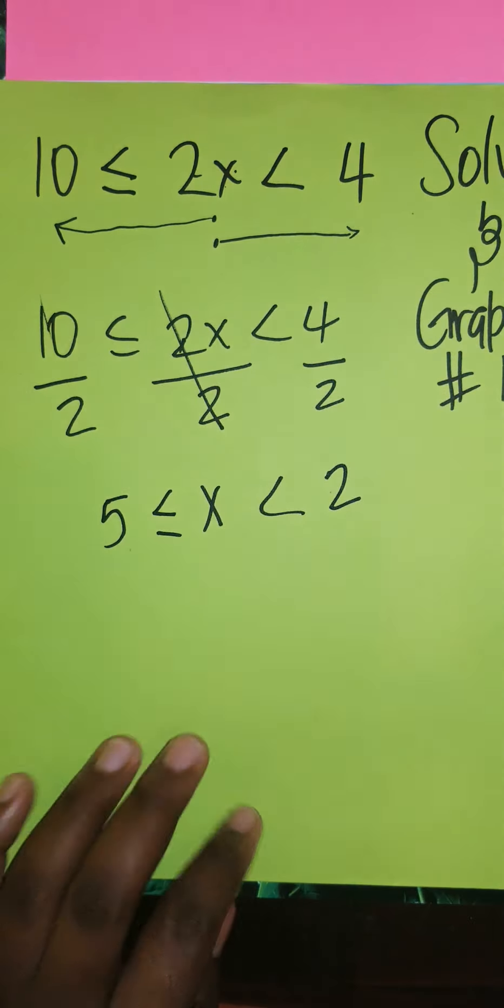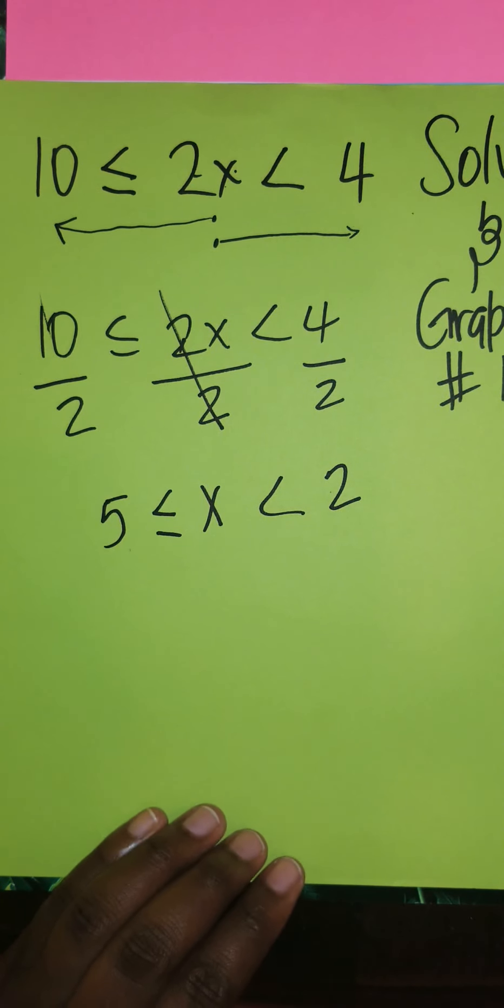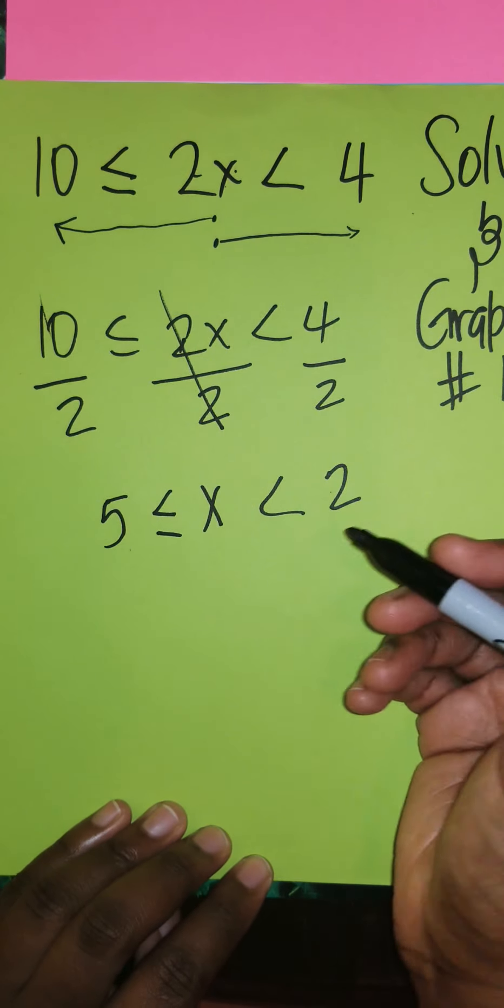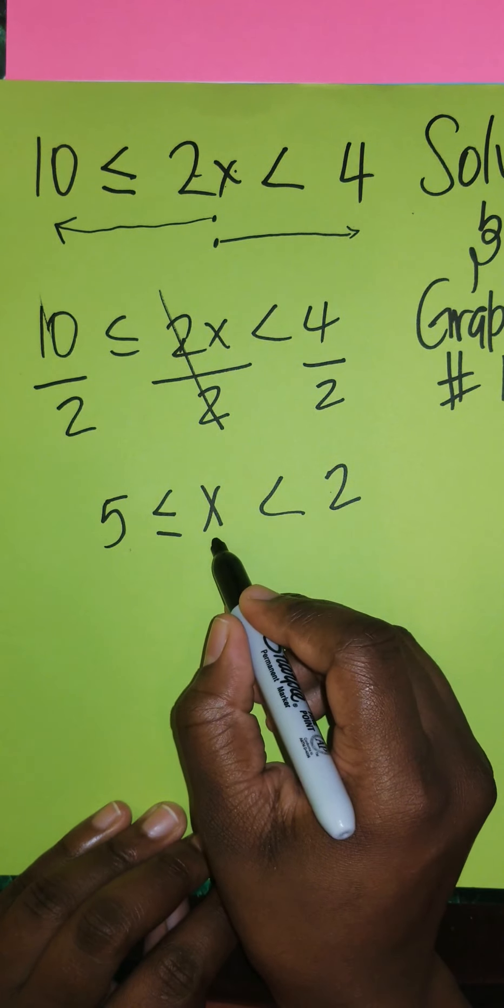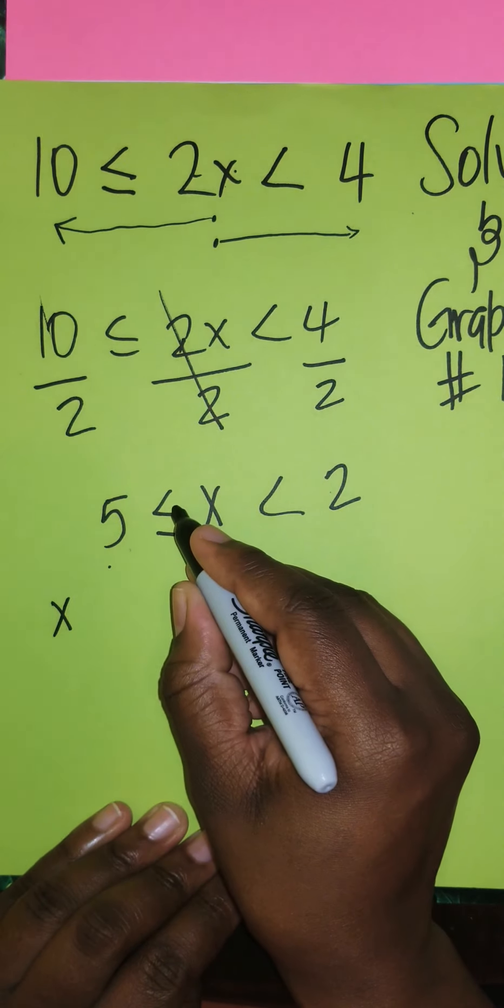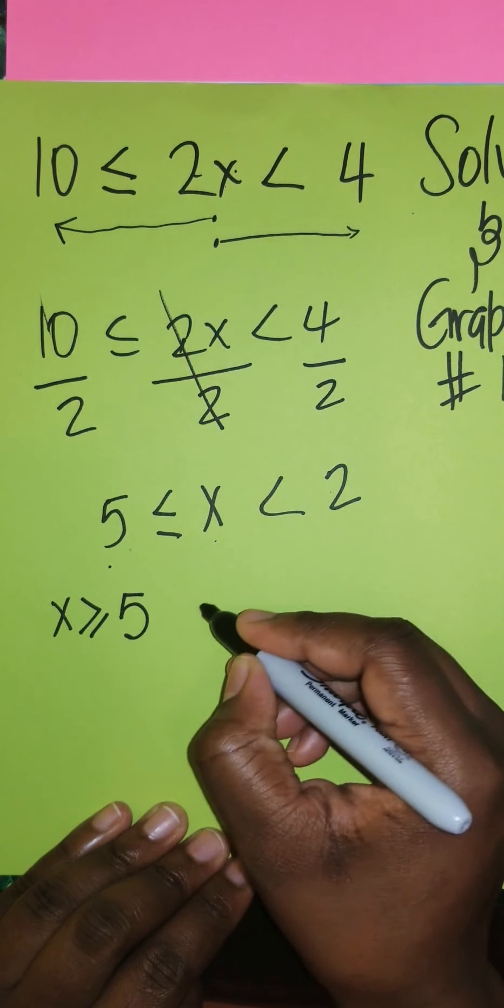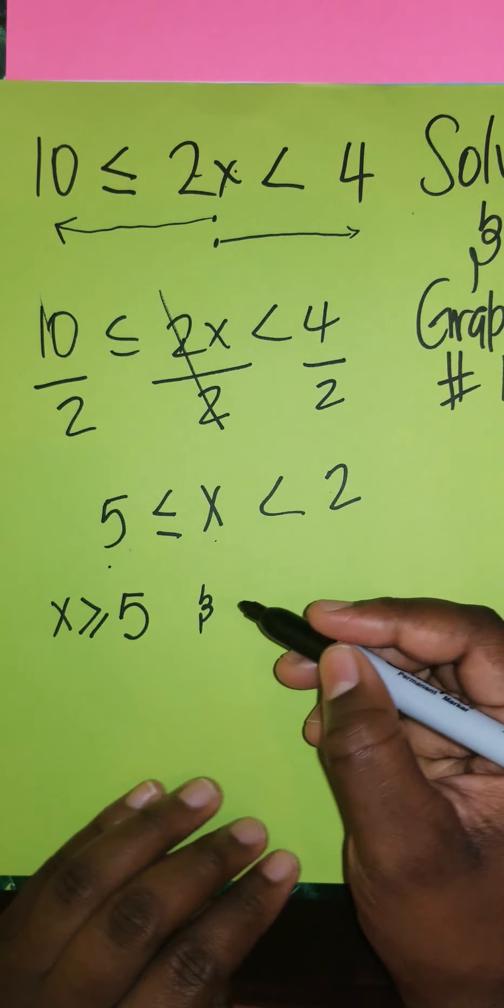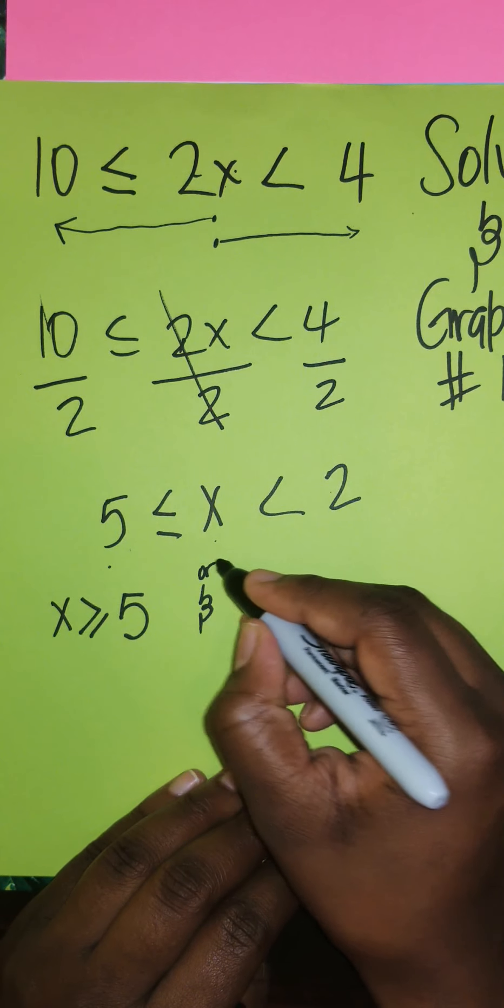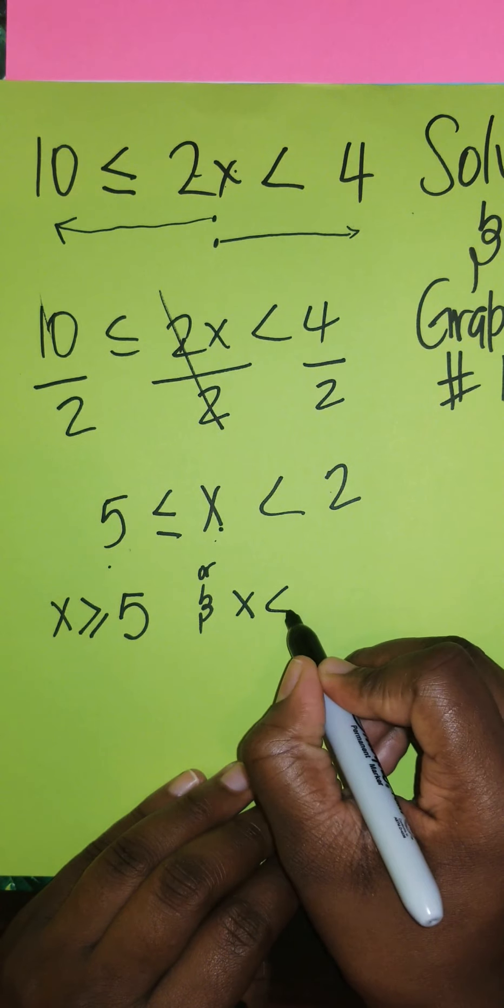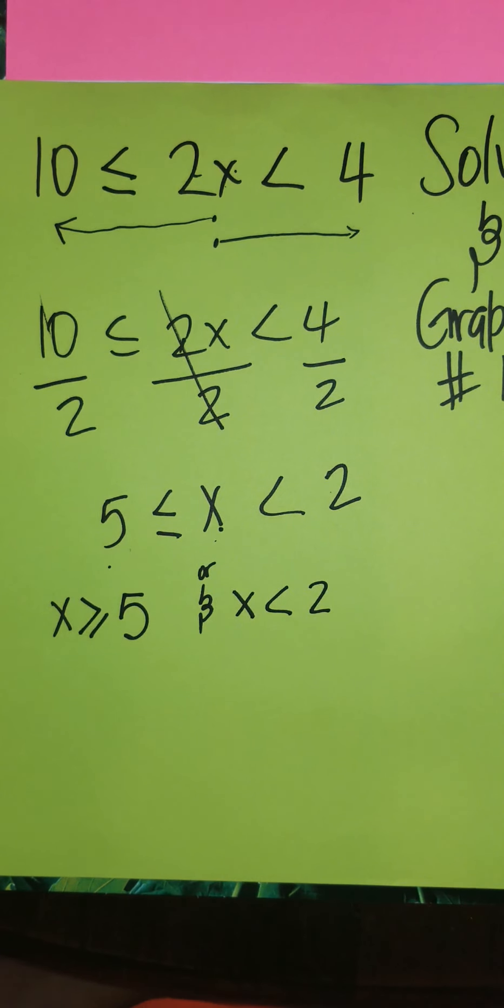Here you could be asked to rewrite this giving two inequalities. If you're asked to rewrite it, you basically read from the middle to your left, so it says x is greater than or equal to 5, and it says x is less than 2. So x is greater than or equal to 5 and x is less than 2. This is basically you splitting the given compound into the two simple inequalities.